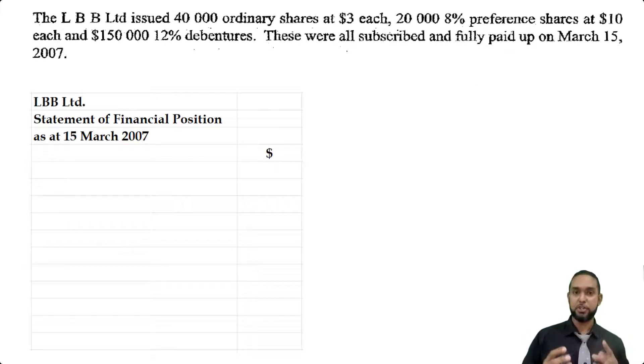There's not going to be any big structure. We only have a few things. We have one asset, cash or bank, because we just issued shares and debentures and cash came in. And on the capital and liability side we're going to have two types of shares—ordinary shares, preference shares—and we're also going to have debentures.